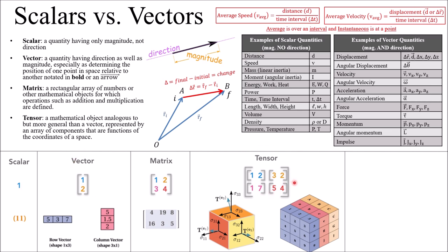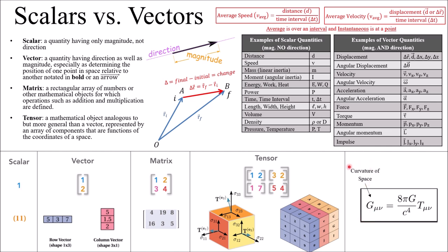If we understand vectors, we can build up to complicated ideas like Einstein's general theory of relativity. His famous equation has a tensor representing the curvature of space on one side, and on the right side, one representing the distribution of mass and energy. Those things are essentially equal, with constants like 8 pi, the gravitational constant, and the speed of light. These concepts build up to very important ideas in physics.